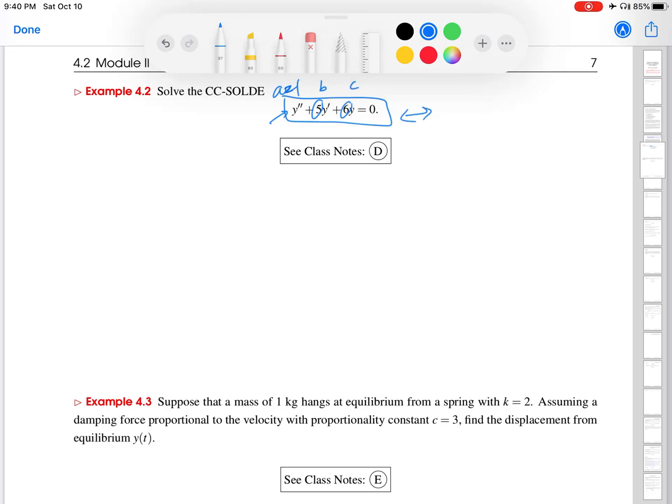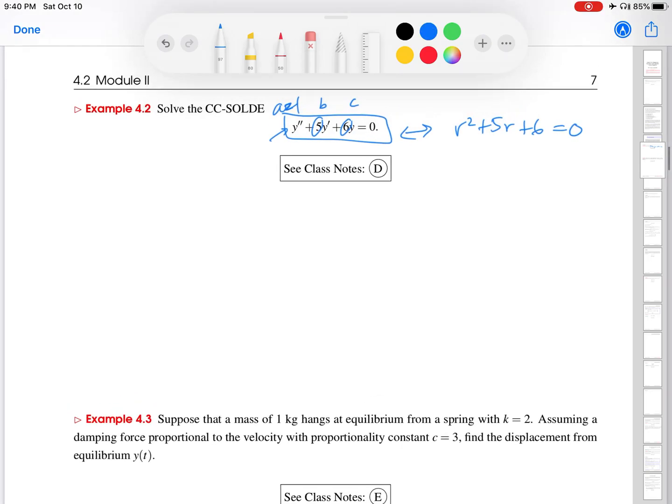So the characteristic equation corresponding to this one is r squared plus 5r plus 6 equals 0. Let me take this opportunity to give you a little tip for writing this out a little faster.